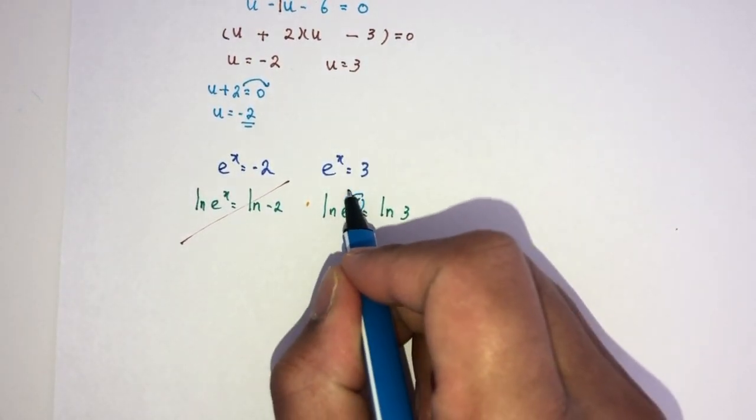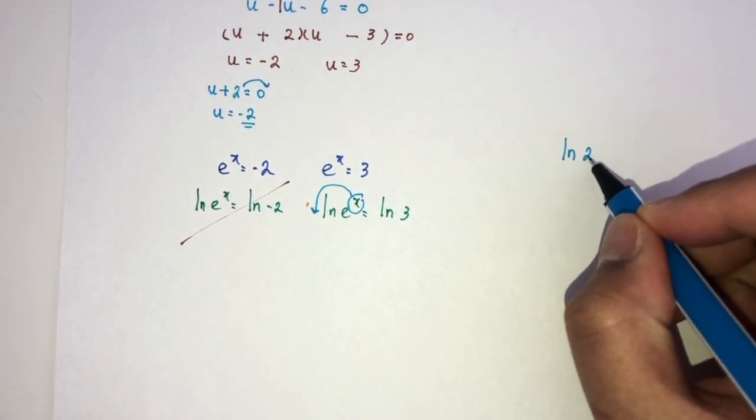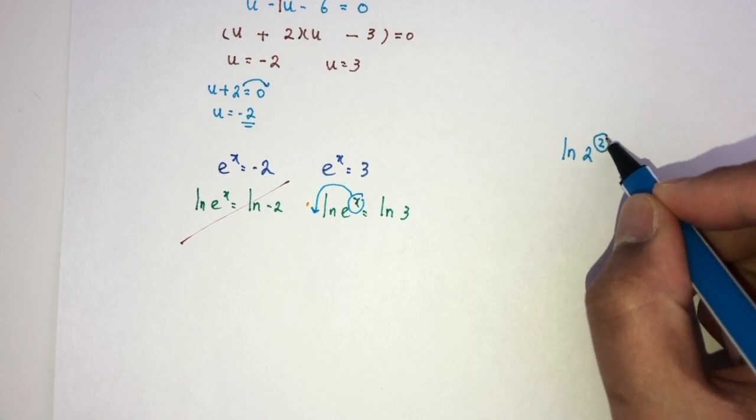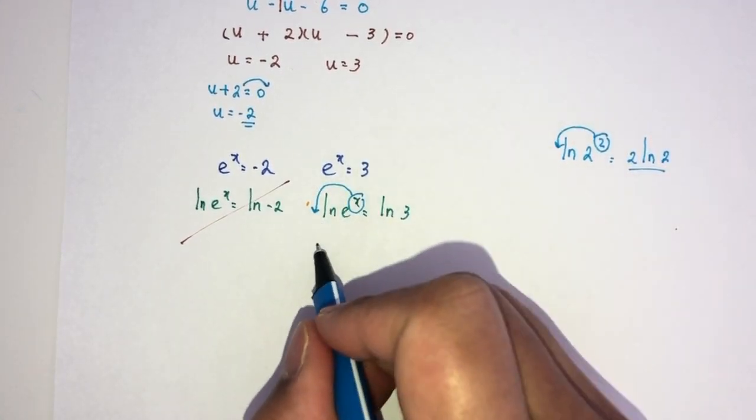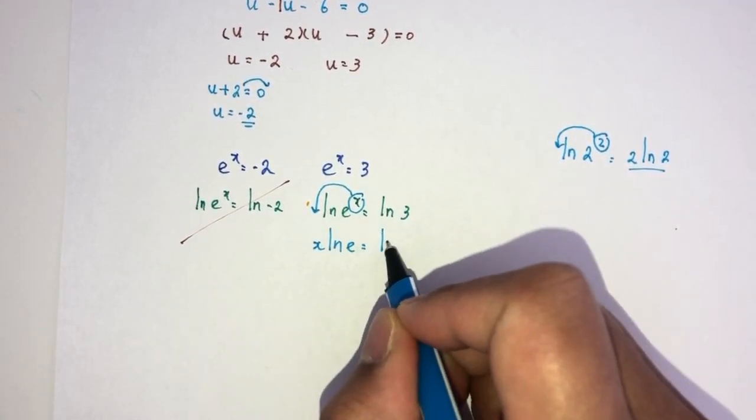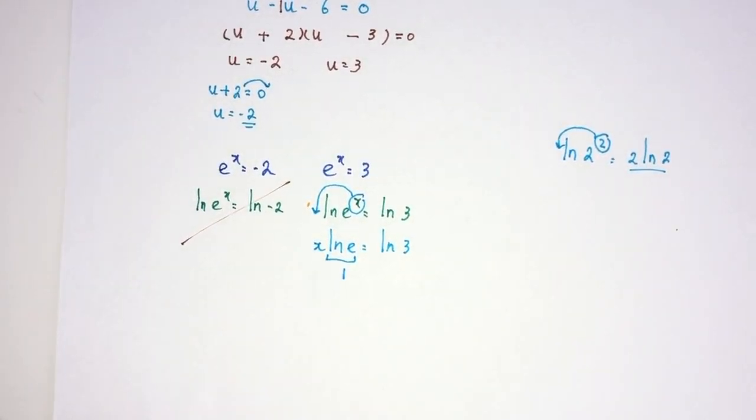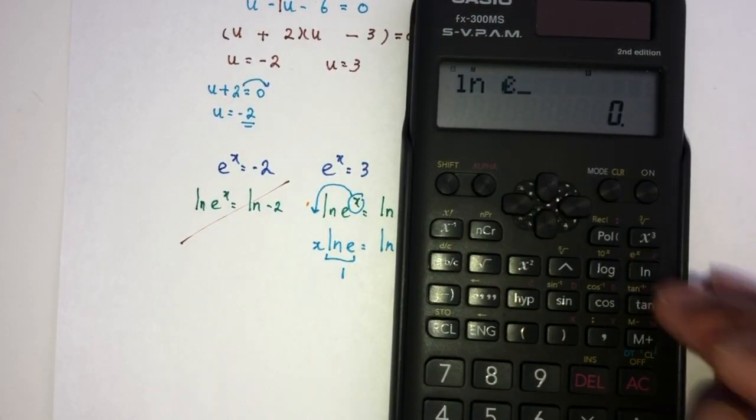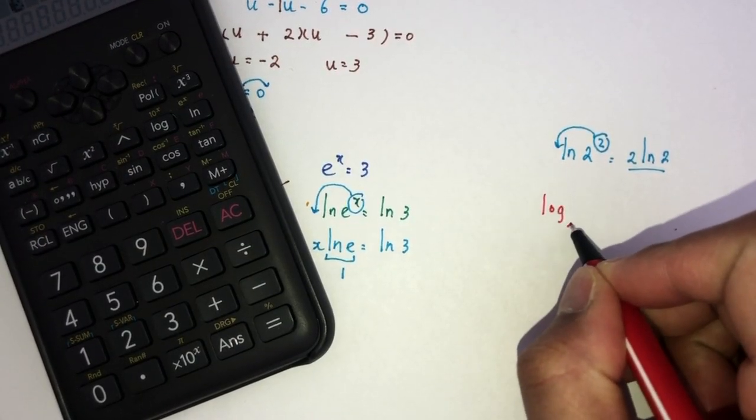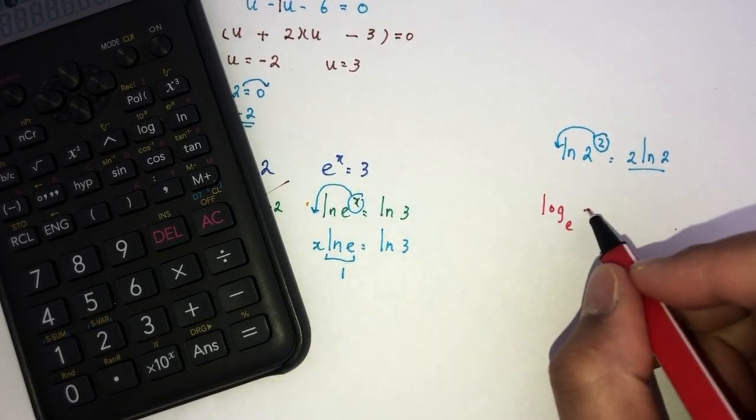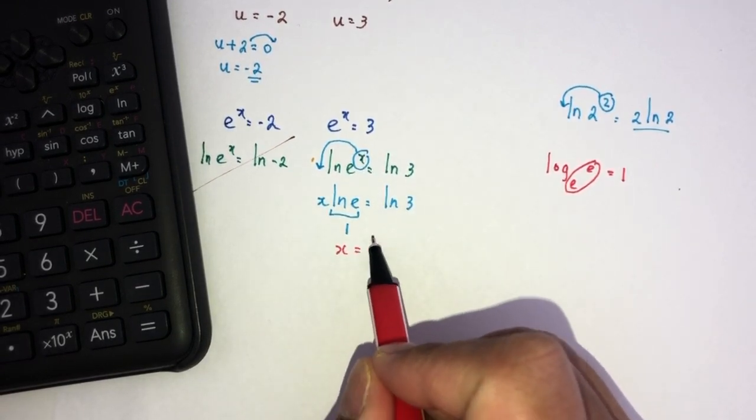So, x could become here because by the laws of logarithms, this is possible. For example, let's say we have ln of 2 power 2. I can bring this here. This is the same thing as 2 ln of 2. So, similarly, I can bring this here. That will become x ln of e has to be ln of 3. Now, this will be 1. We can check. ln of e is 1. Now, how do I know this? Because what is ln? ln is actually log to the base of e. Now, taking the value of e, so when these two match, it has to be 1.